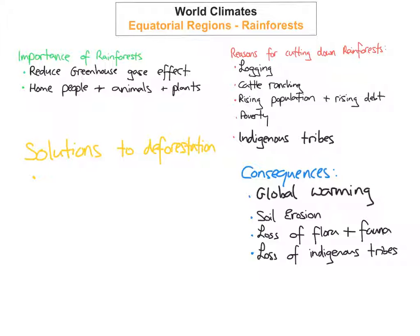We're now going to look at some solutions to prevent deforestation. The first solution is a debt-for-nature swap, which would involve the Western world reducing the foreign debt that countries like Brazil owe them, in return for those countries stopping the cutting down of the rainforest to pay off their debt. This would be difficult to police and manage, but it is a solution, since governments often chop down rainforest specifically to sell it and pay off national debt.